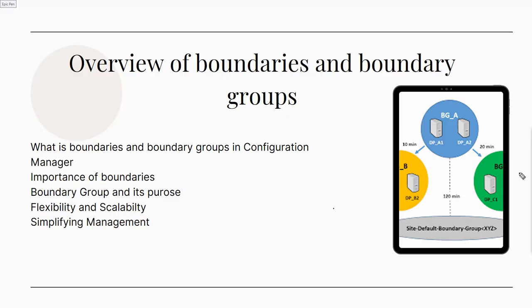In SCCM, boundaries represent a network location such as IP address, Active Directory site and services, IPv4 and IPv6, that helps SCCM to identify the geographical location of devices you want to manage in your infrastructure. SCCM uses boundaries to define the scope of management for clients and facilitate content distribution and client communications.